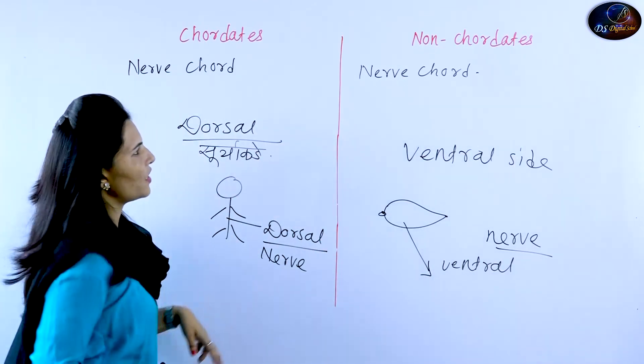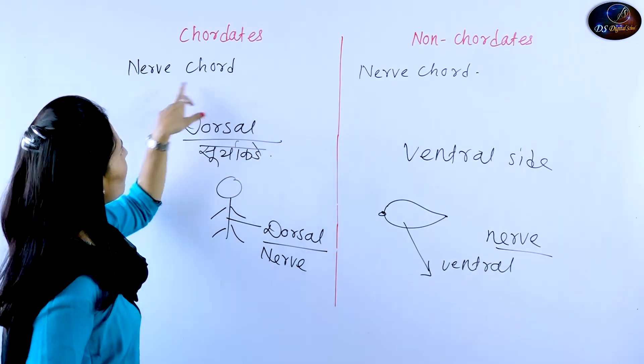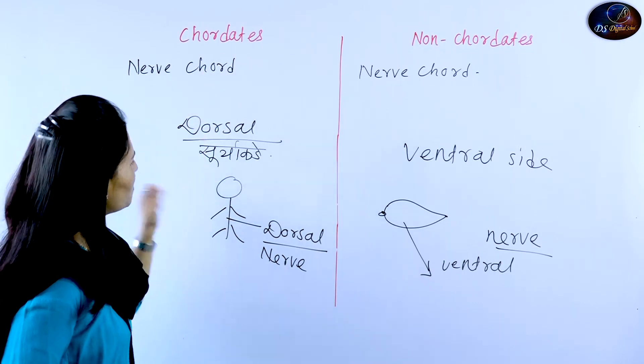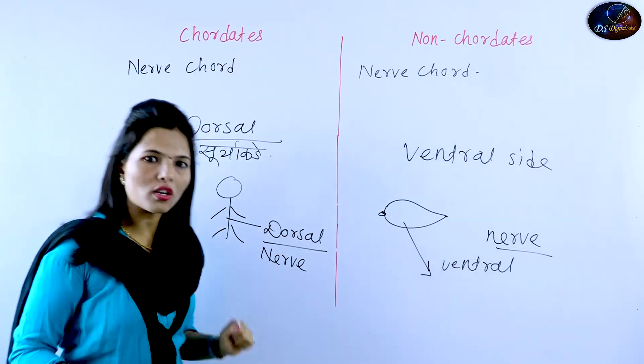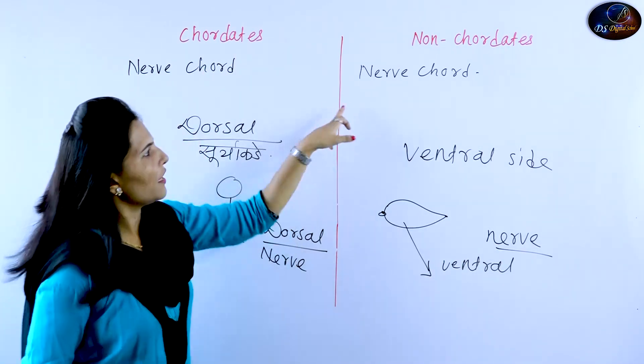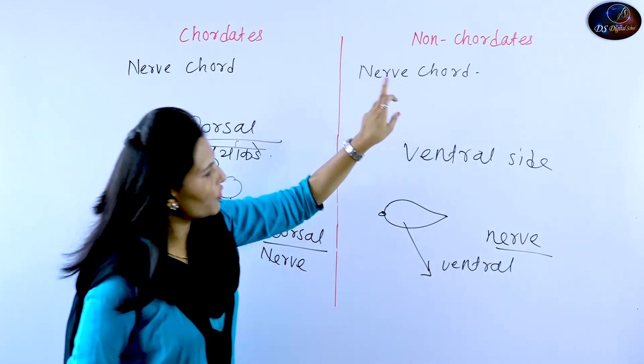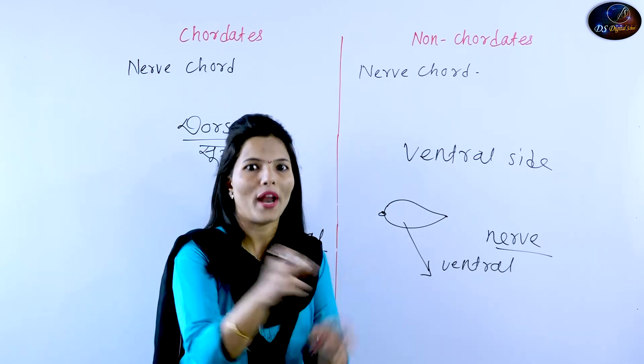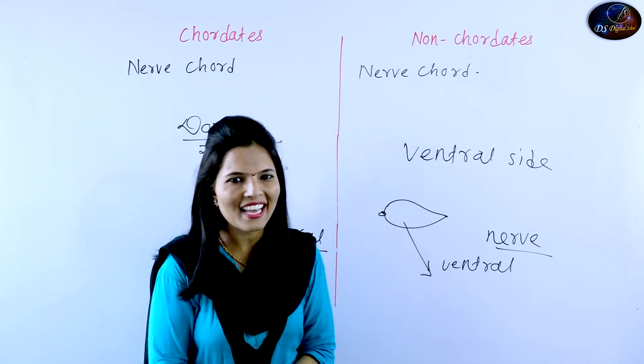So what is our next difference? The nerve cord of the chordates is present on the dorsal side, and the nerve cord of the non-chordates is present on the ventral side.